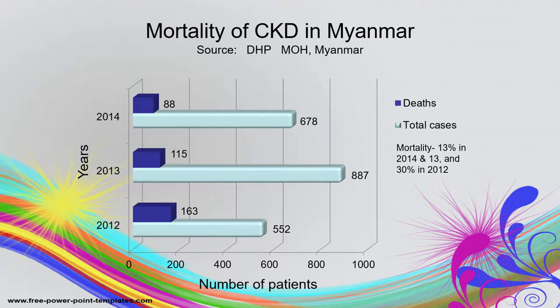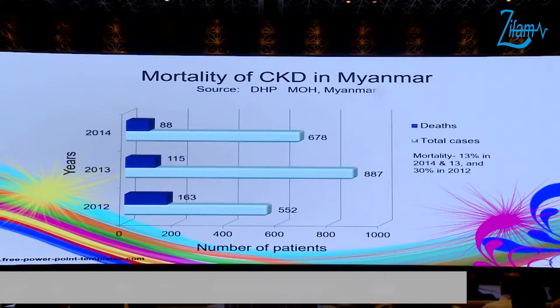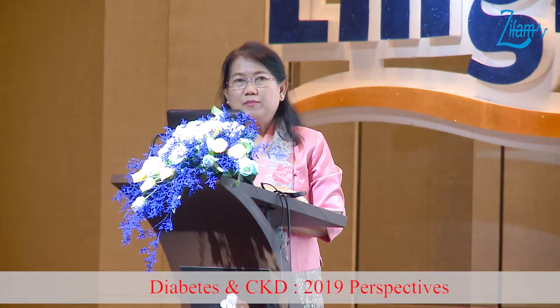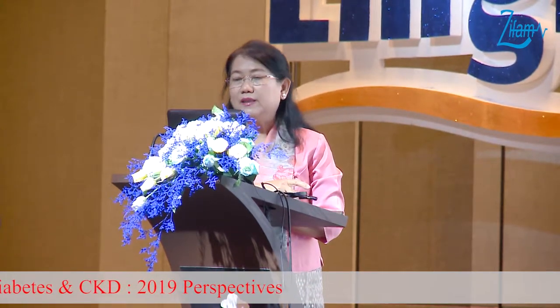Regarding the mortality of CKD in our country, every year we compare the number of admitted cases to government hospitals and their mortality. In 2012, CKD mortality was 30%, and in 2013 and 2014 the mortality remained around 30%. This may be supported by the introduction of renal replacement therapy in the later part of those years.